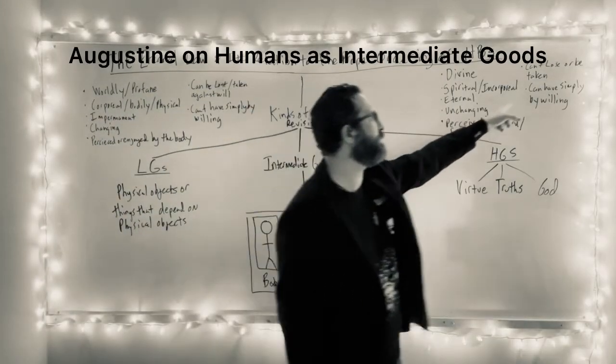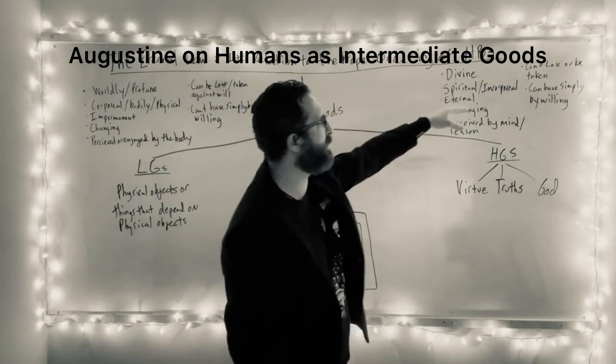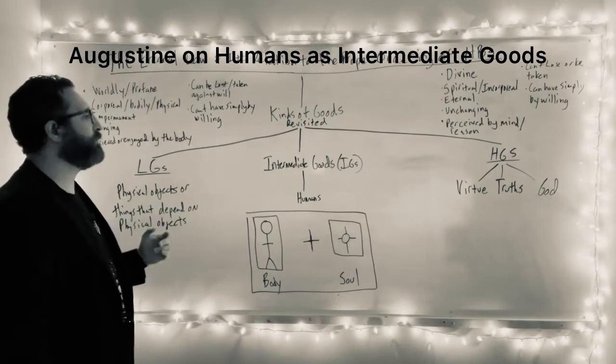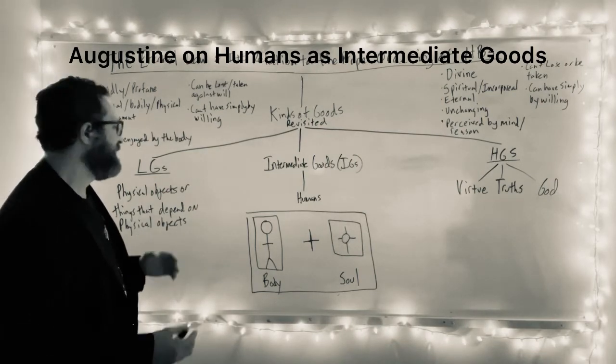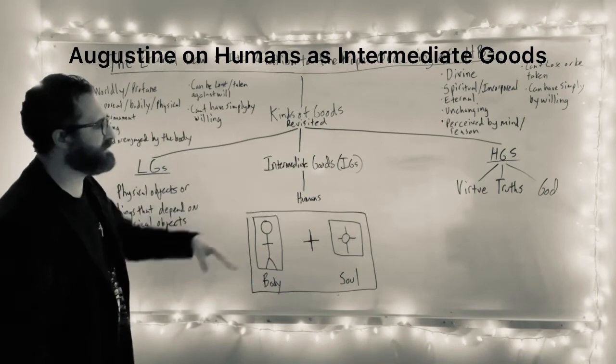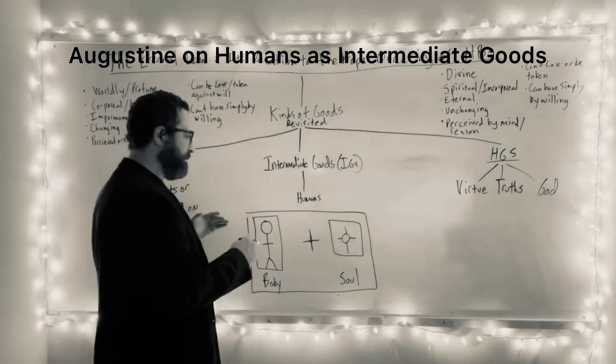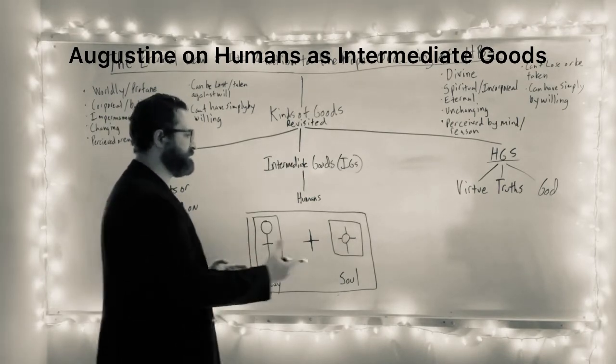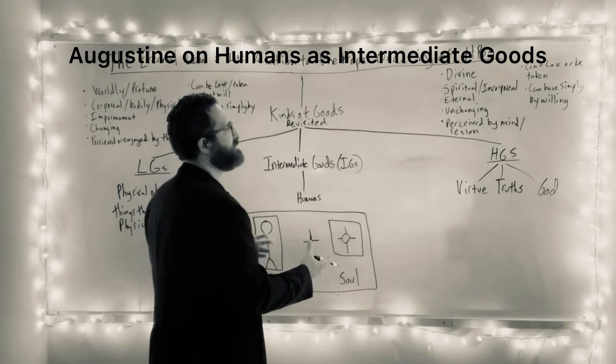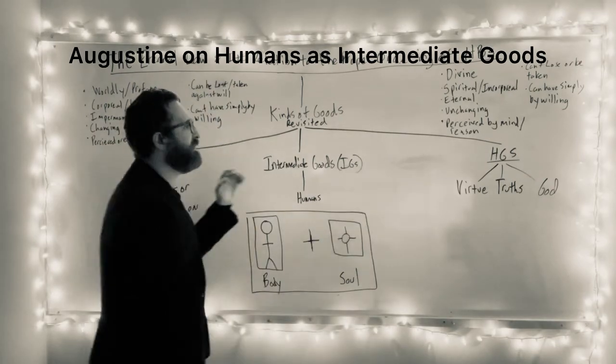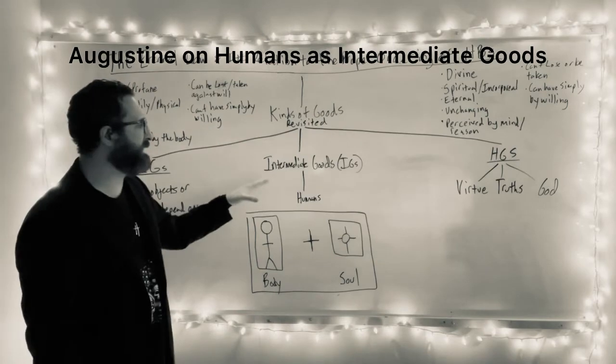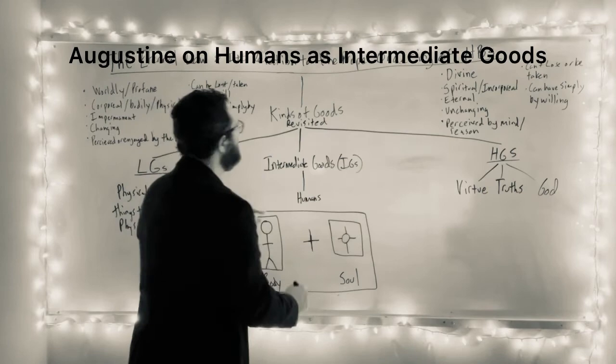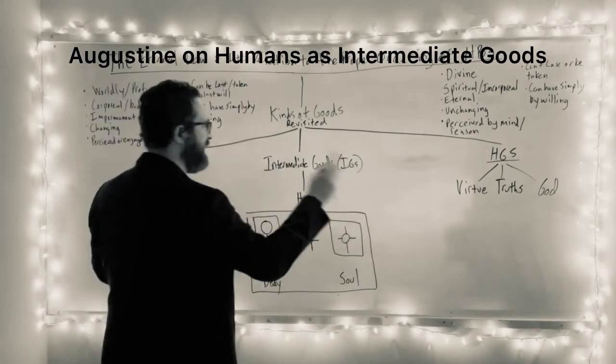Maybe it's not so clear what to say about the soul in relation to this quality of you can have it simply by willing. So the point here is that Augustine takes human beings to be the intermediate goods because they're composed of two main parts or substances, body and soul. And each of those parts shares at least some features of the higher goods or lower goods, hence making human beings kind of in between the lower goods and the higher goods.